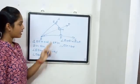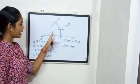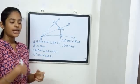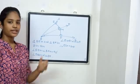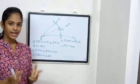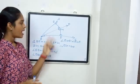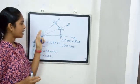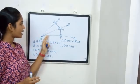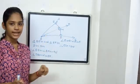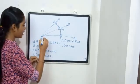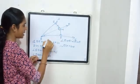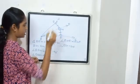Therefore, EGB equals GF. Now, one triangle is equal by one side and two angles. This angle is the opposite side and this angle is the opposite side.